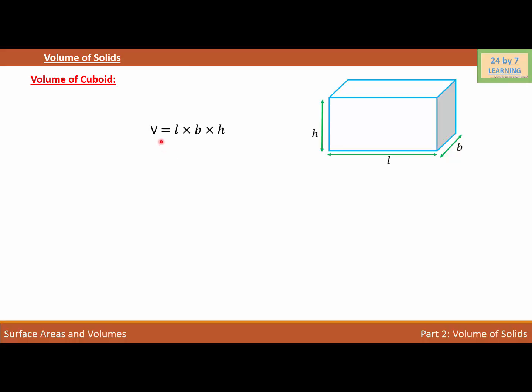The volume of a cuboid is given as V = l × b × h. So basically what we need to do, if we know the length, width, and height of the cuboid, is just plug in the values and multiply, and that will be the volume of the cuboid.